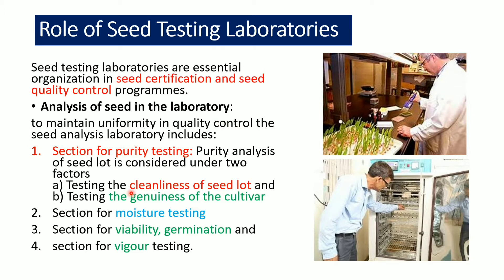Under purity testing, we test for cleanliness of the seed lot, known as physical purity test, and testing of the genetic nature of the cultivar, known as genetic purity test. The second section is moisture testing, which is required when seeds have to be stored for a longer period. Moisture content must be reduced to an optimum level so that metabolic activities for germination are reduced during storage and activated only during growing seasons. Seeds also need to be tested for viability and germination.